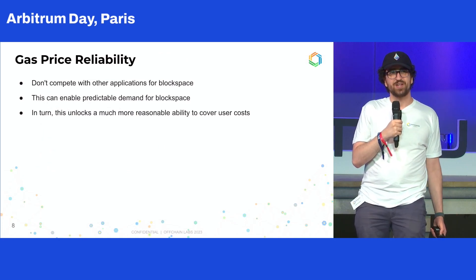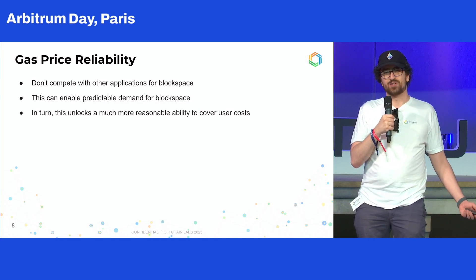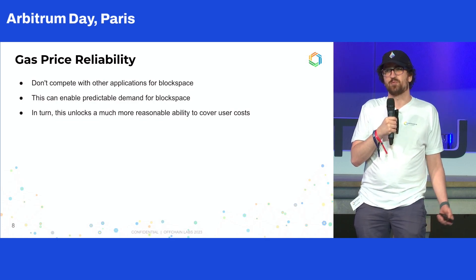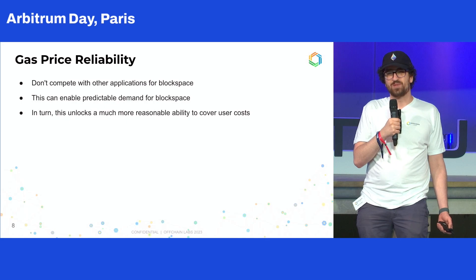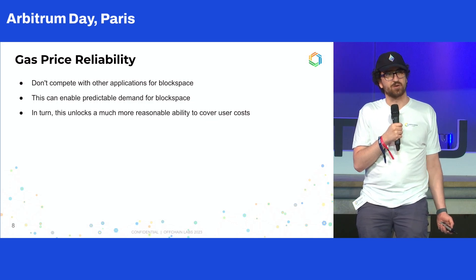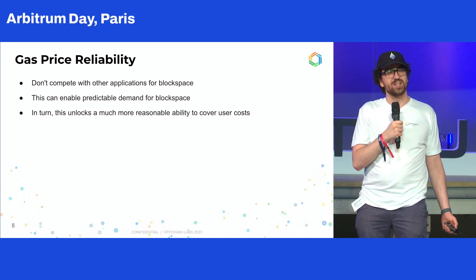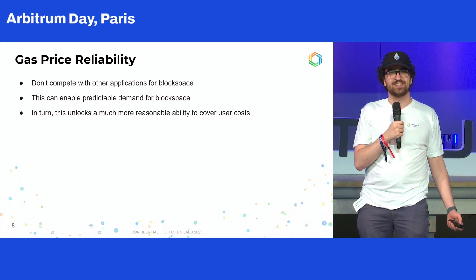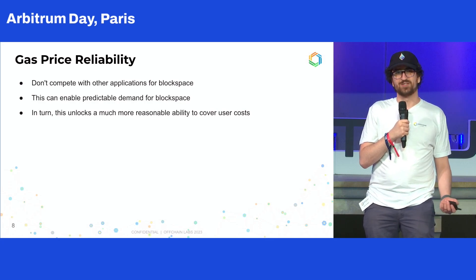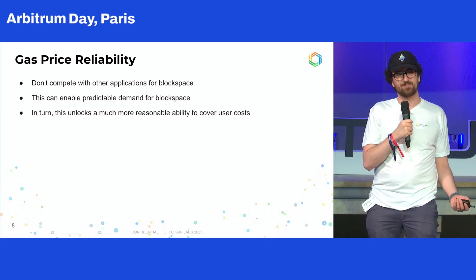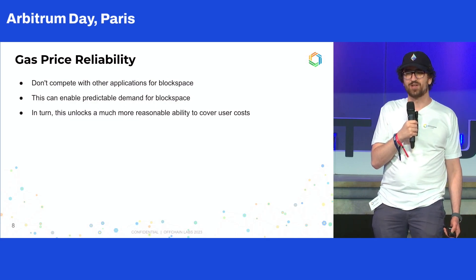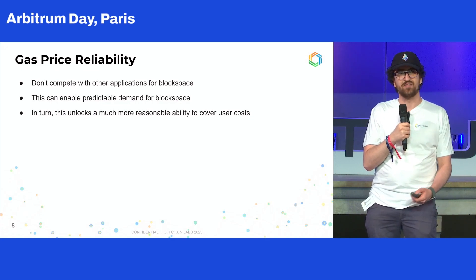Next up is gas price reliability. When you deploy on Arbitrum One, Arbitrum Nova, or wherever else, the cost to your users is really at the whim of what other applications are there. Block space is relatively available on Arbitrum One right now, but that will change over time as demand grows. Arbitrum Orbit chains give you the ability to have dedicated capacity for just your chain, your application, so you don't need to worry about a meme coin launching and suddenly gas prices 10x for your users. If you want to hedge against that, you can just have your own block space.